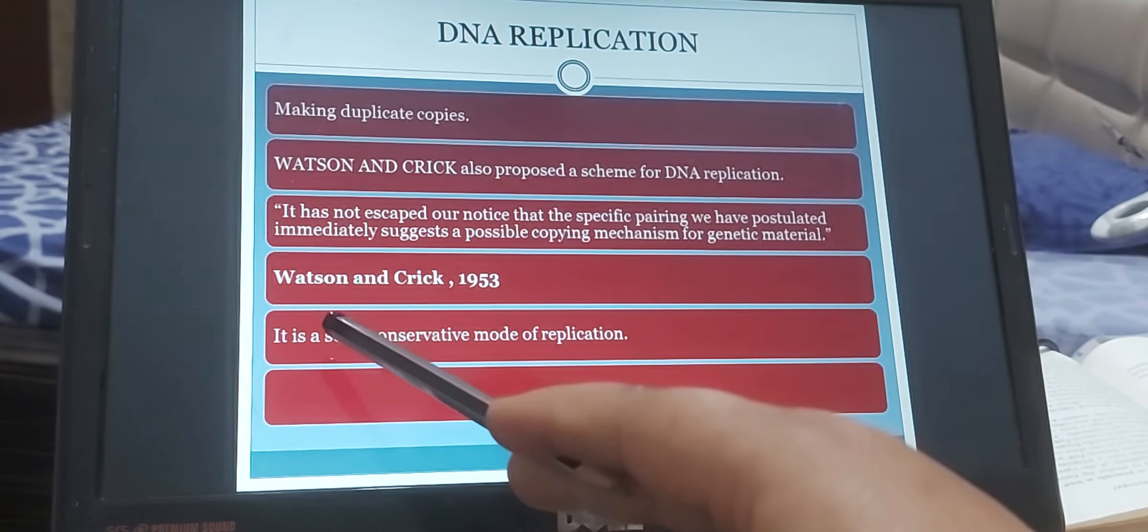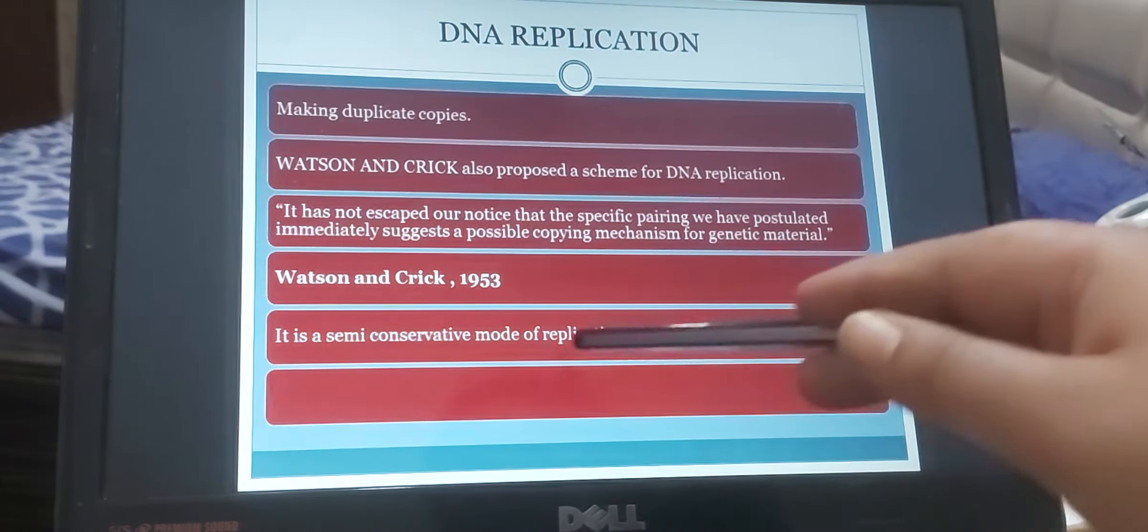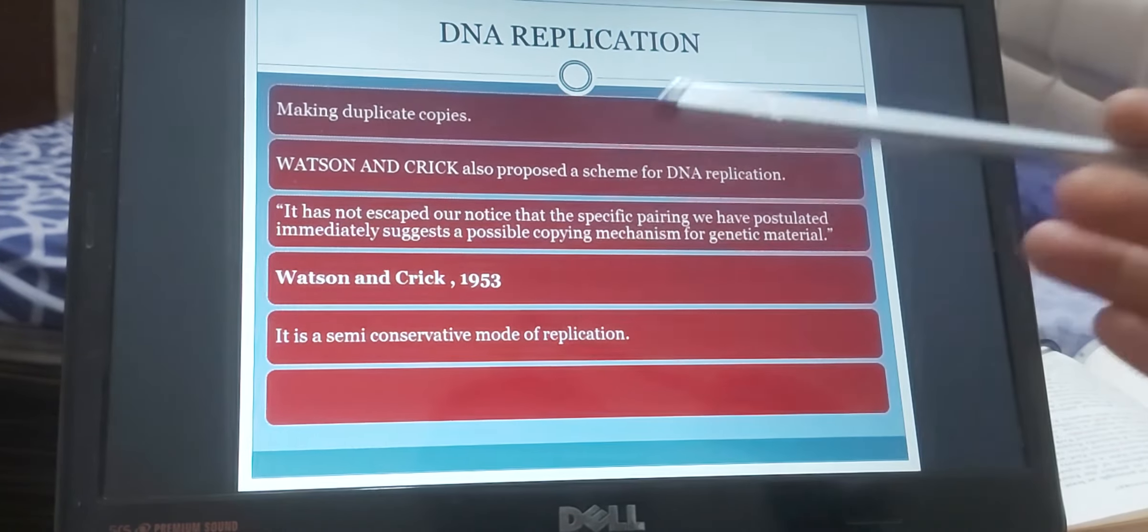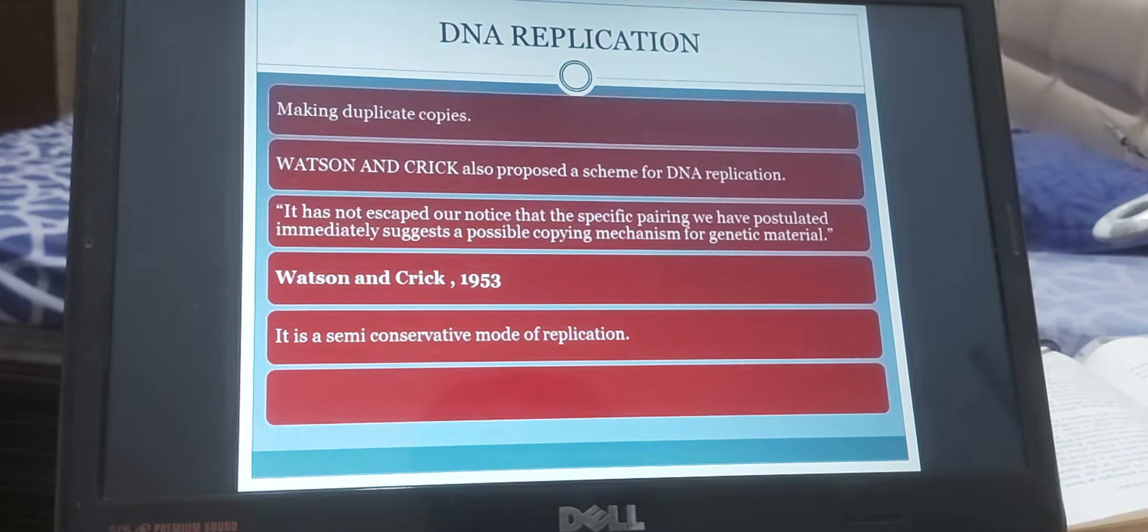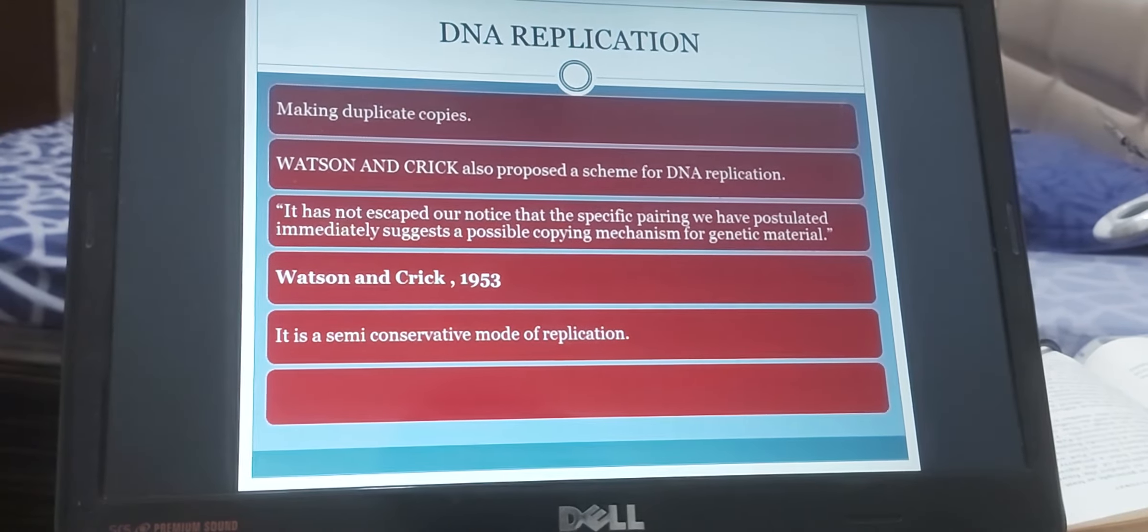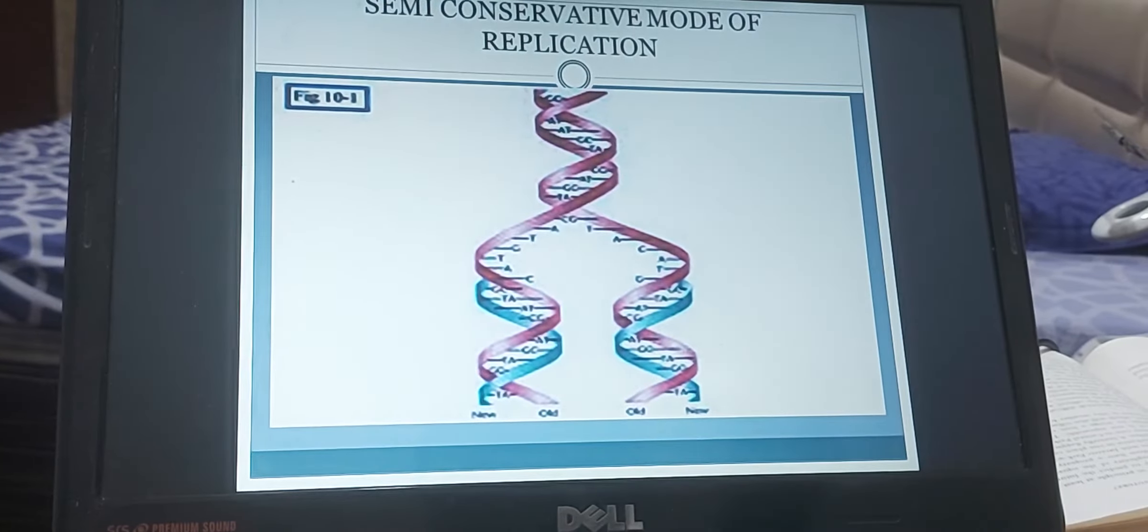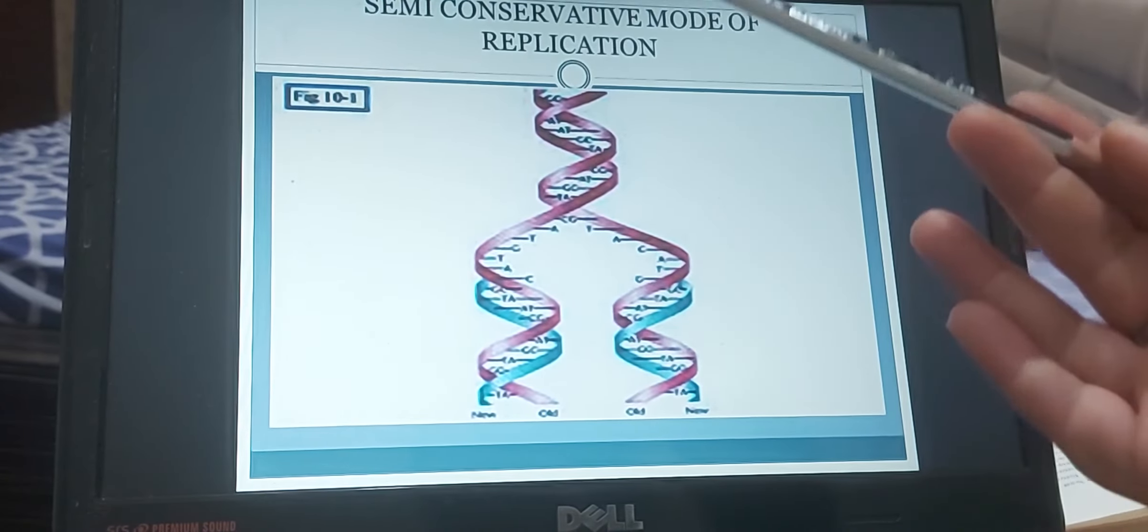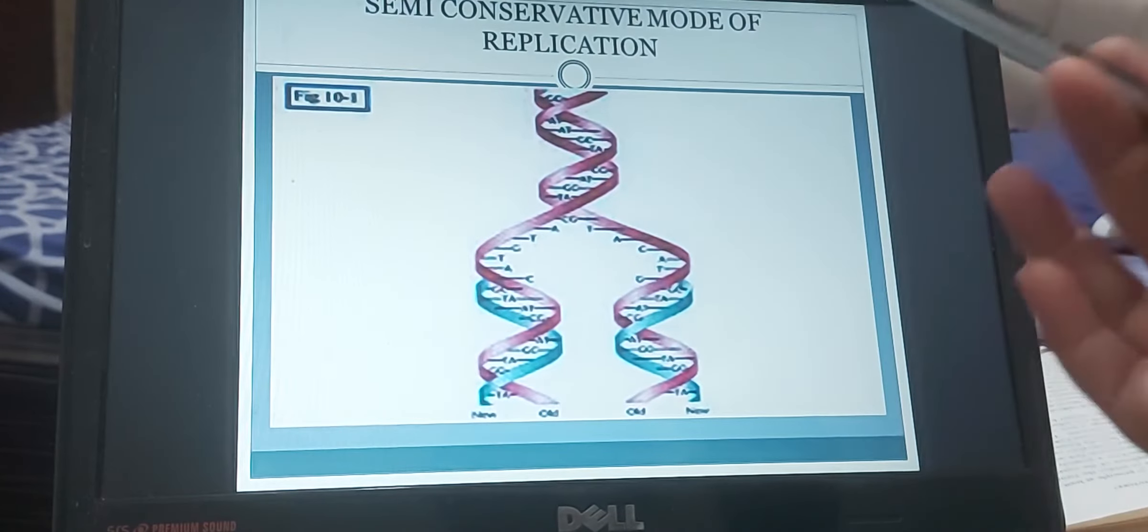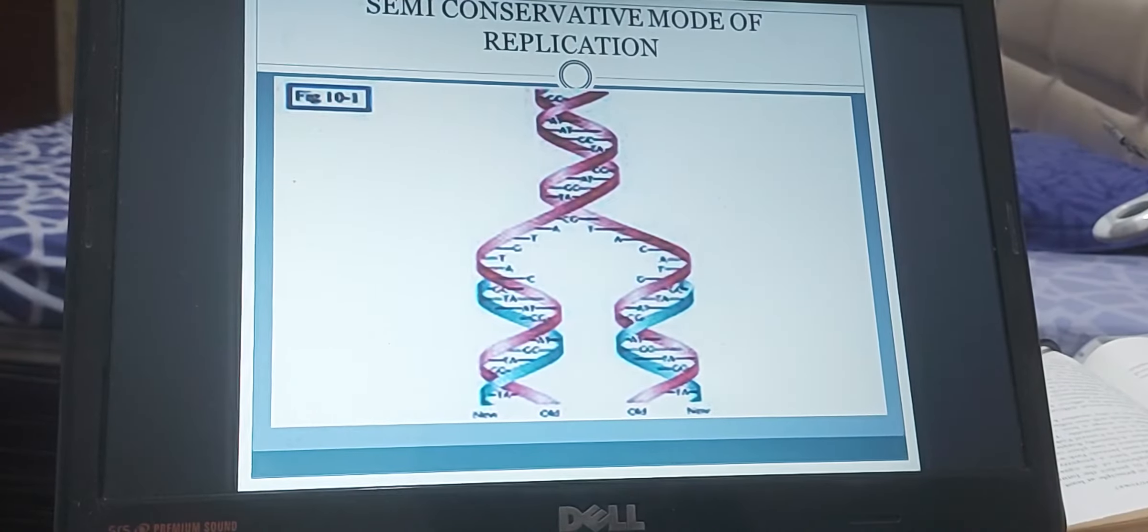Now, DNA replication is always called as a semi-conservative mode of replication. So we have to understand what is semi-conservative. Semi means some part or the partial or the half. And the conservative is the previous one is conserved.